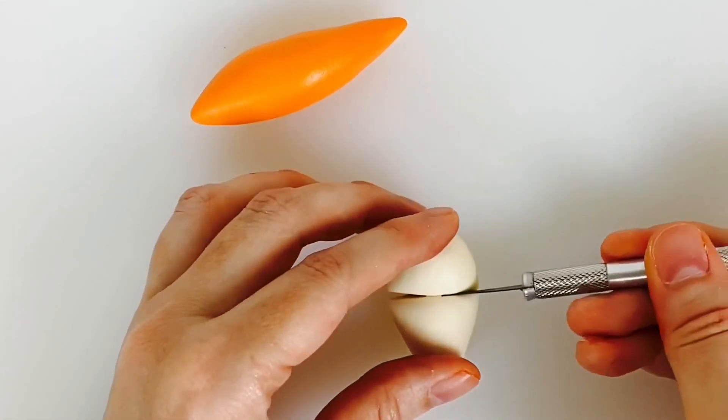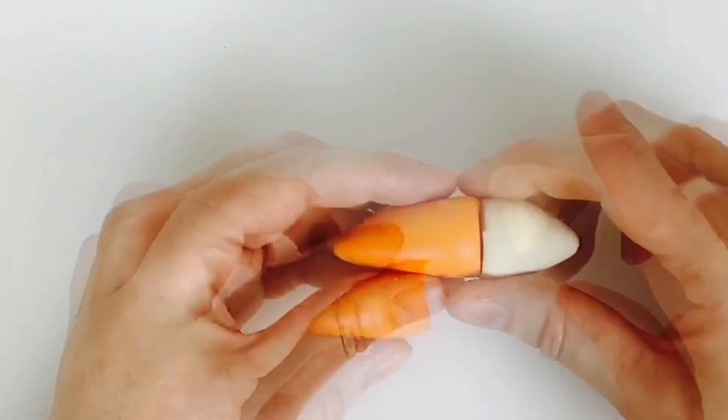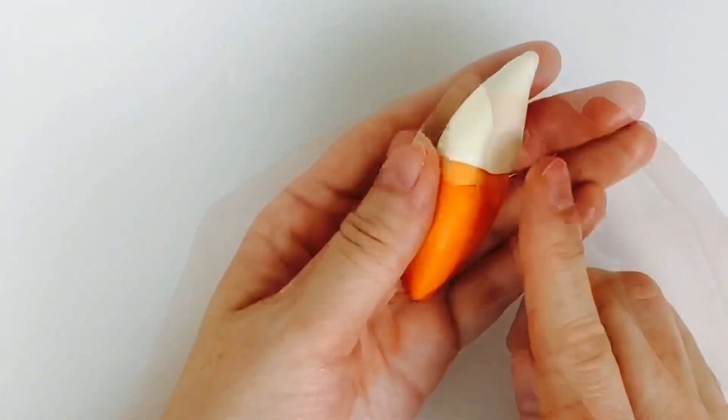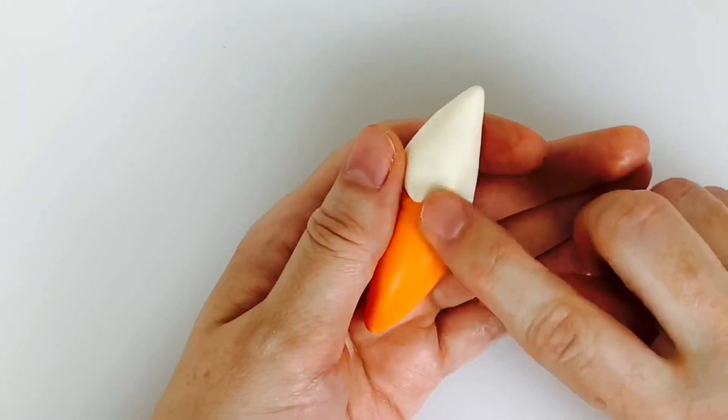Roll 13.5 grams of orange modeling paste into a taper ended sausage and repeat with the off-white modeling paste. Trim the end off of the orange paste and replace with a small piece of the white paste. Use your fingers to gently stretch and pull the paste into a scallop pattern.